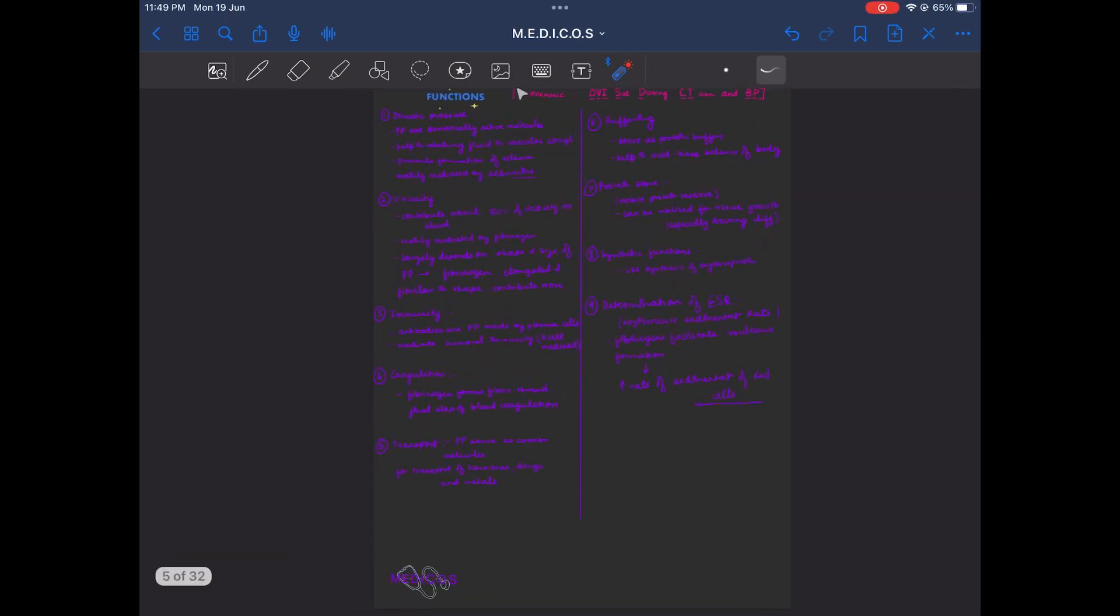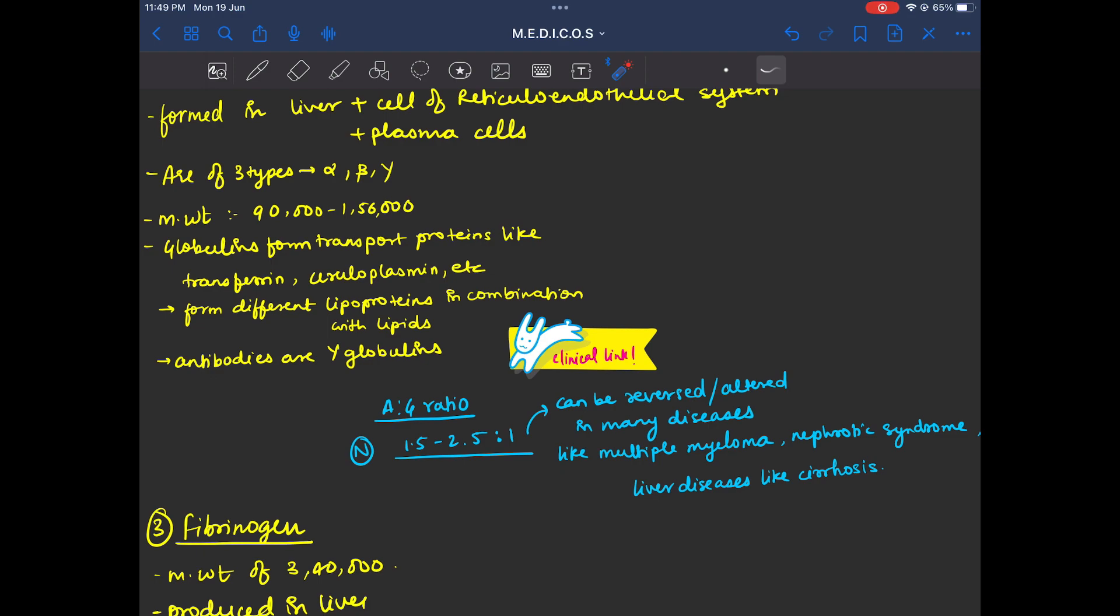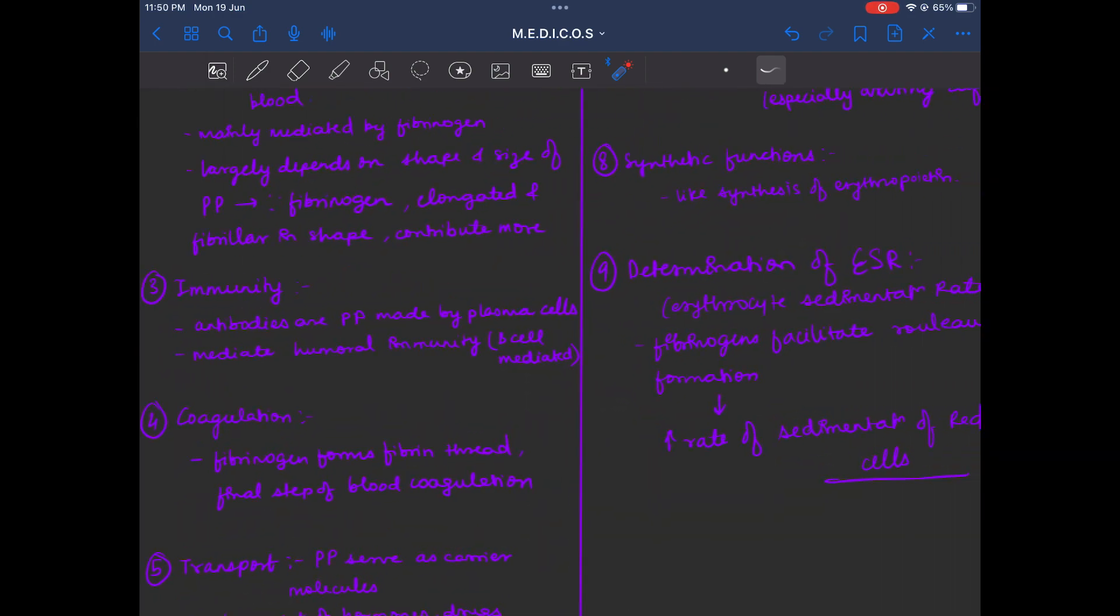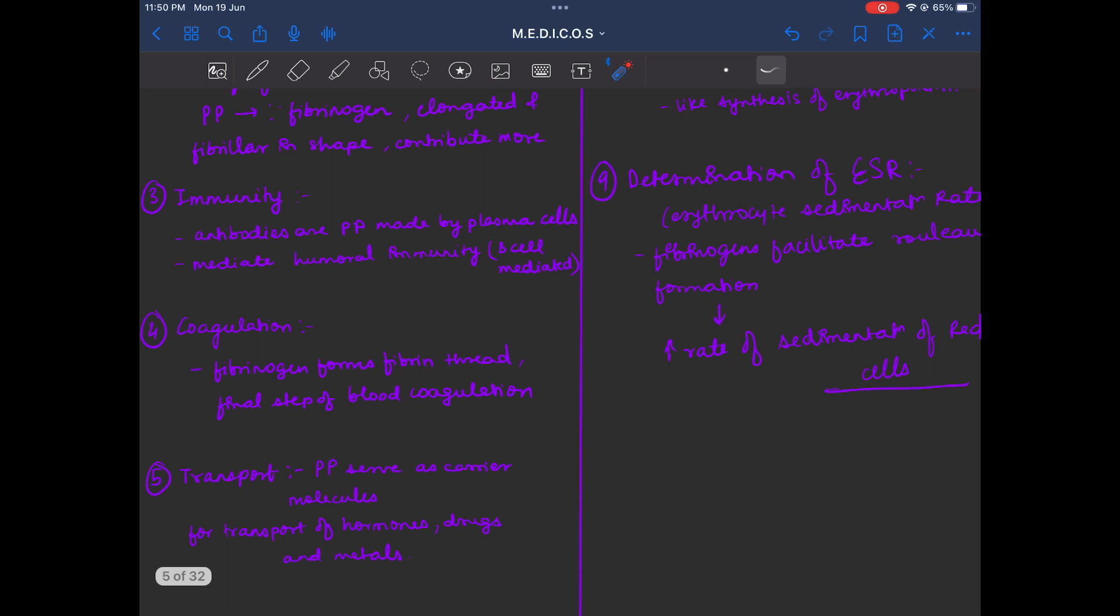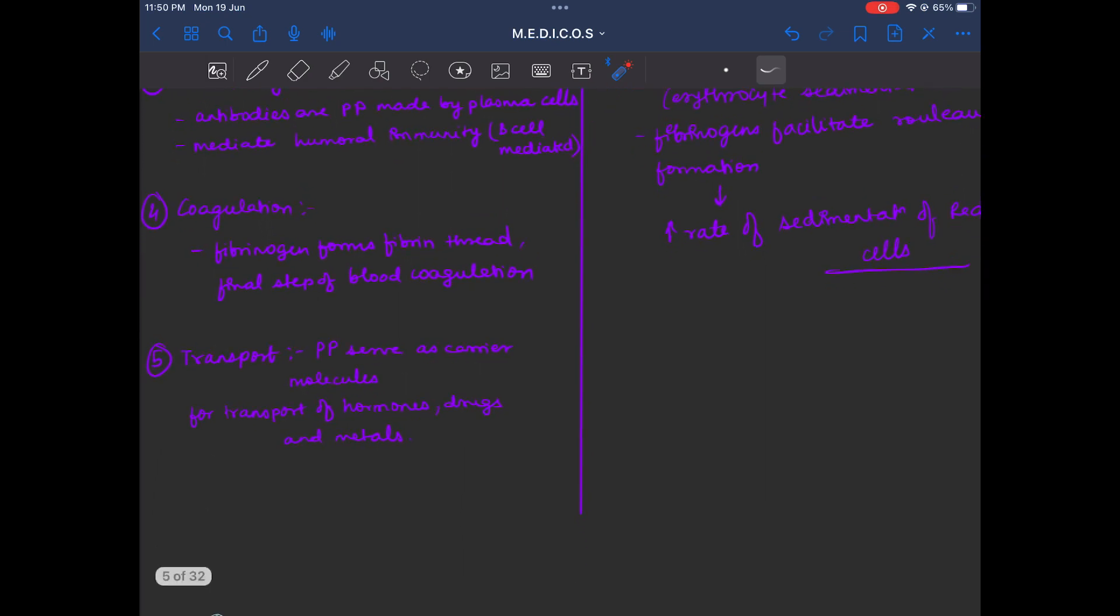Third is immunity. As we said that gamma globulins are antibodies. Antibodies are plasma proteins made by plasma cells. They mediate mainly the humoral immunity - B cell mediated immunity.